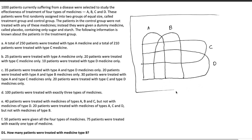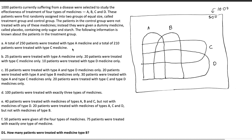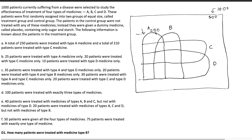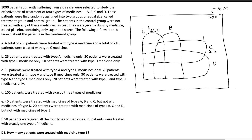The total number of patients is 1000, represented by the universal set. They are divided into two equal parts: 500 patients in the control group — all outside the projection diagram — and the remaining 500 within the A, B, C, and D projections. Let's read each point one by one. A total of 250 patients were treated with type A medicine, representing the whole A projection, so we write 250 below A. A total of 210 patients were treated with type C medicine, so we write 210 below C.